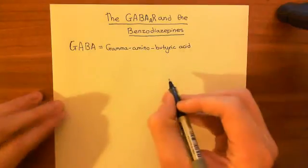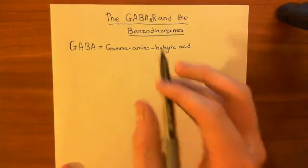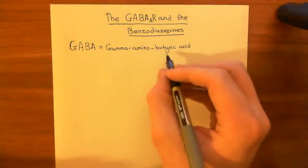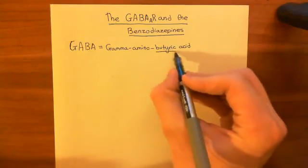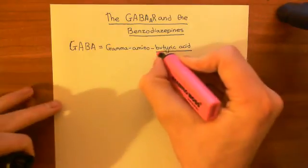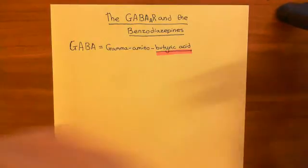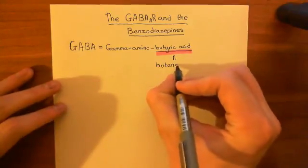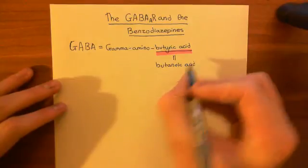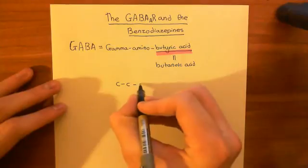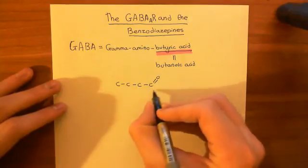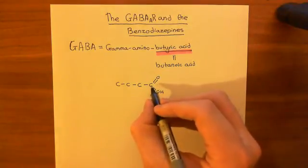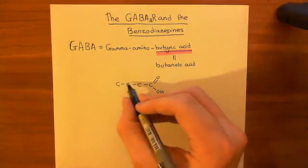Let me show you the structure of gamma-aminobutyric acid. Butyric acid is the old name for butanoic acid. Butanoic acid is a carboxylic acid which has four carbons in it. So here are these four carbons — one, two, three, four — and then on this fourth one, we put the carboxylic acid group. However, this first carbon of the butanoic acid molecule will be counted as carbon one, then two, three, four.